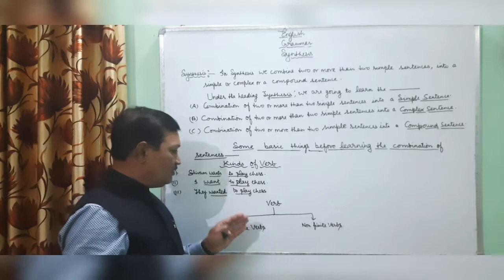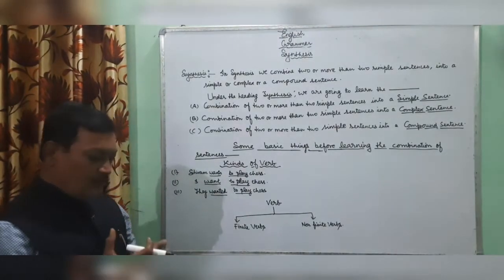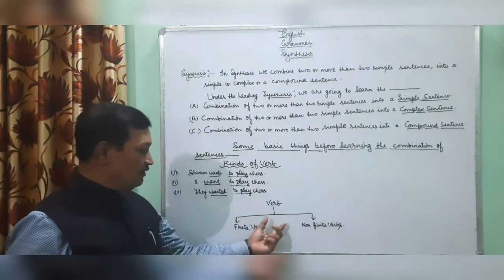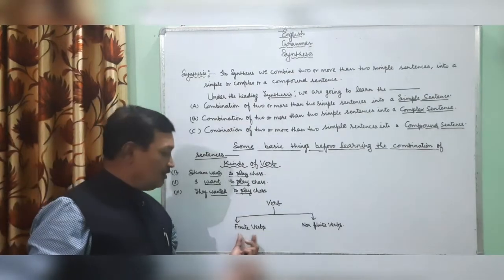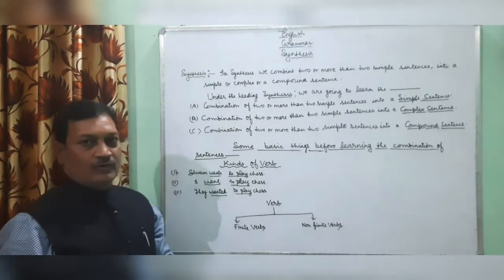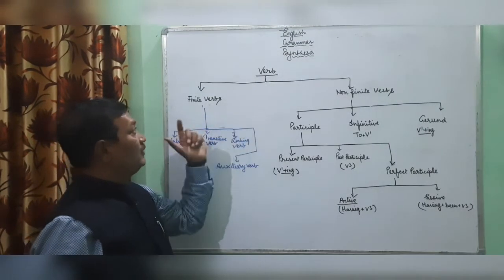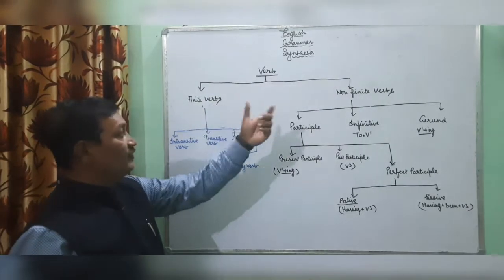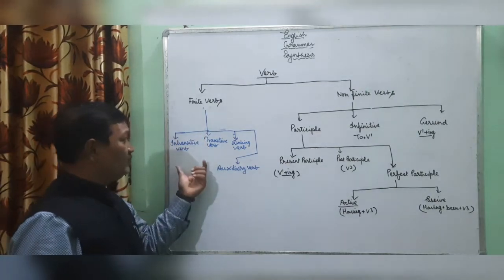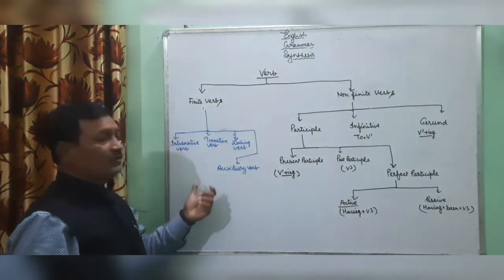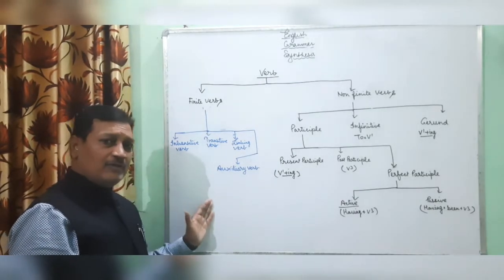Here with the diagram I have shown that verb is divided into two parts: finite verbs and non-finite verbs. Finite verbs are further divided into four parts: intransitive verb, transitive verb, linking verb, and auxiliary verb. Auxiliary verbs are also divided into two parts: primary auxiliary and modal auxiliary.